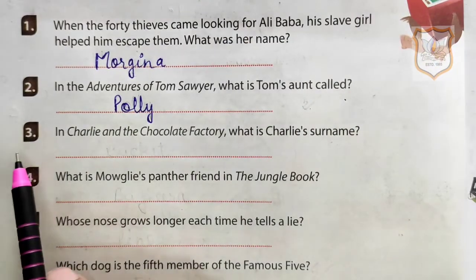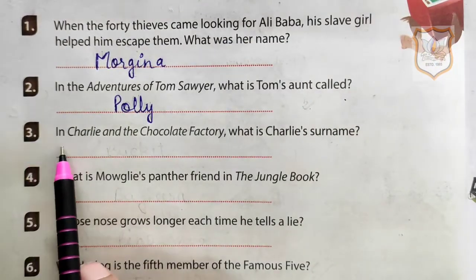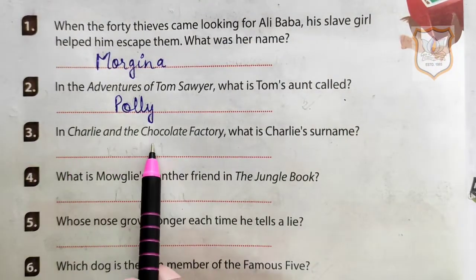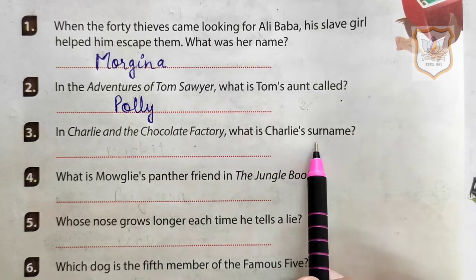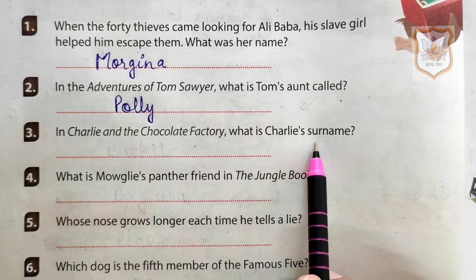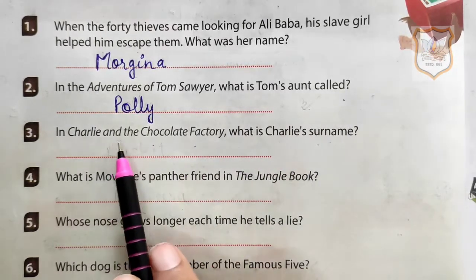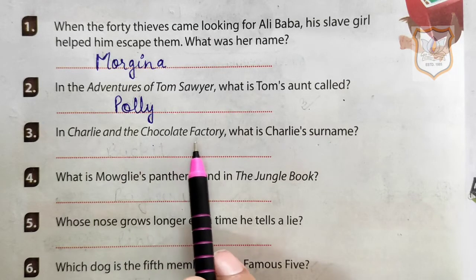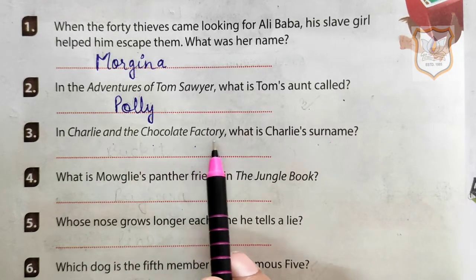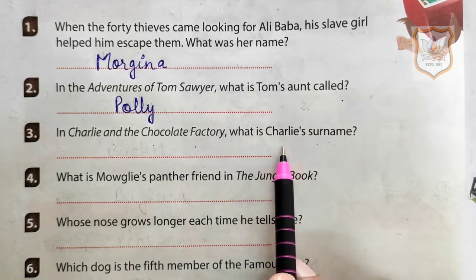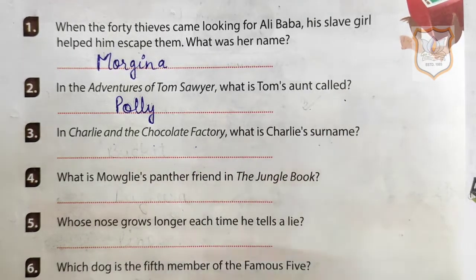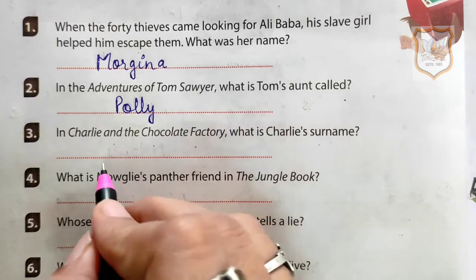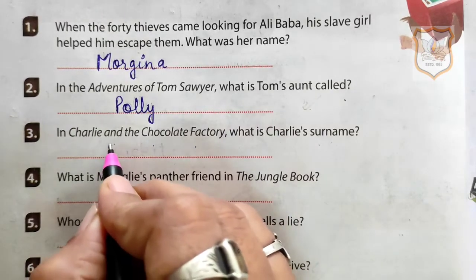Third one: in Charlie and the Chocolate Factory, what is Charlie's surname? In the story of Charlie and the Chocolate Factory, the surname of Charlie was Bucket.